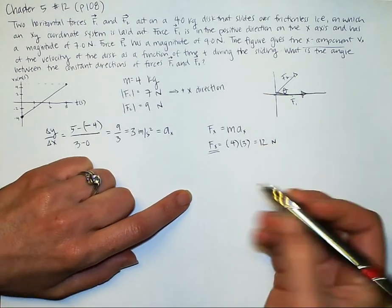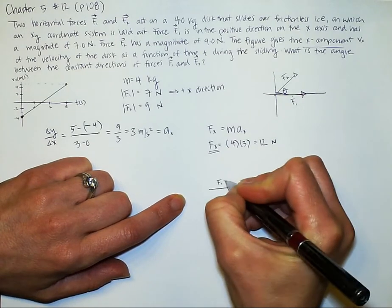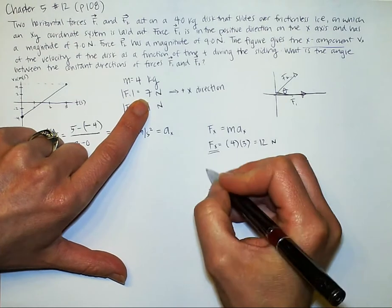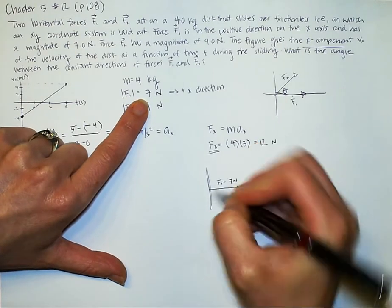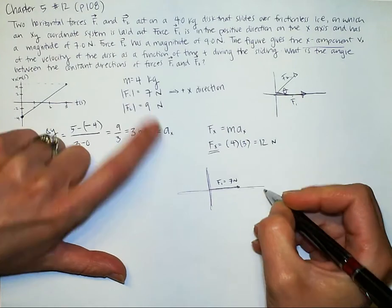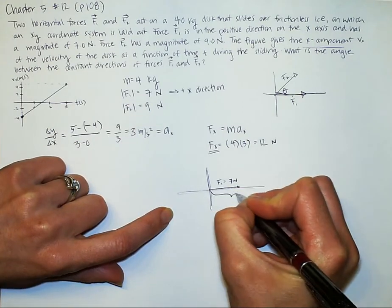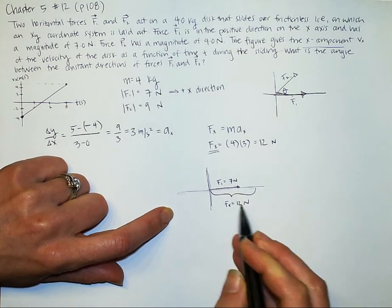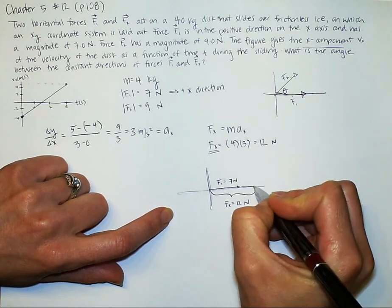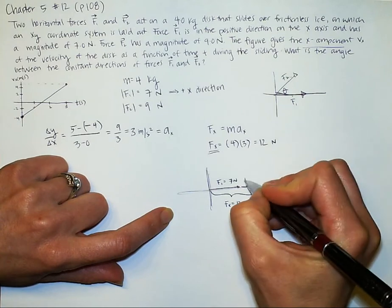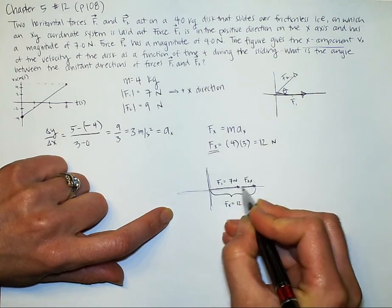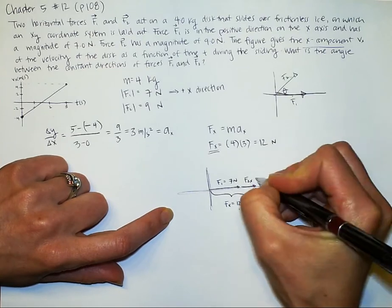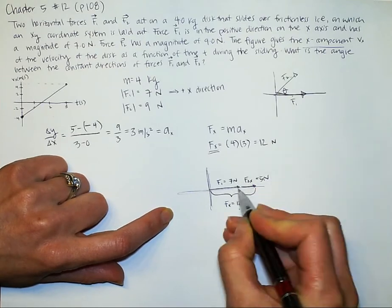We know that force 1 equals 7 newtons completely in the x direction. So this is an axis. Let's sketch that. We know that our total force in the x direction is 12 newtons. So if that's the case, then that means that force 2, just in the x direction alone, would have to be 12 minus 7, which equals 5 newtons.